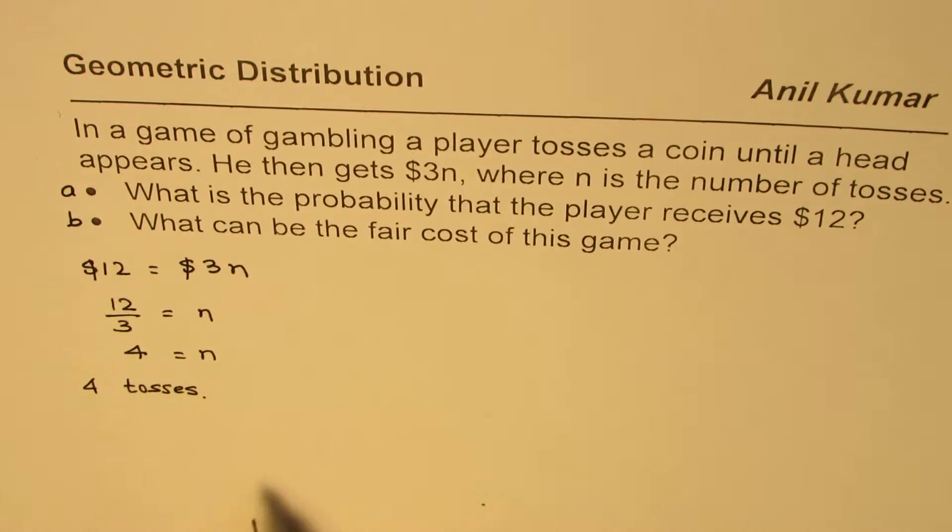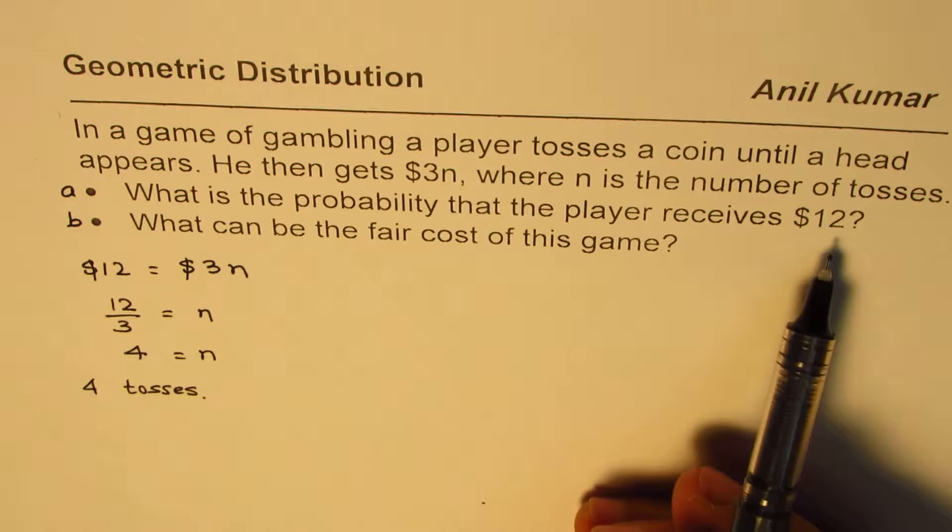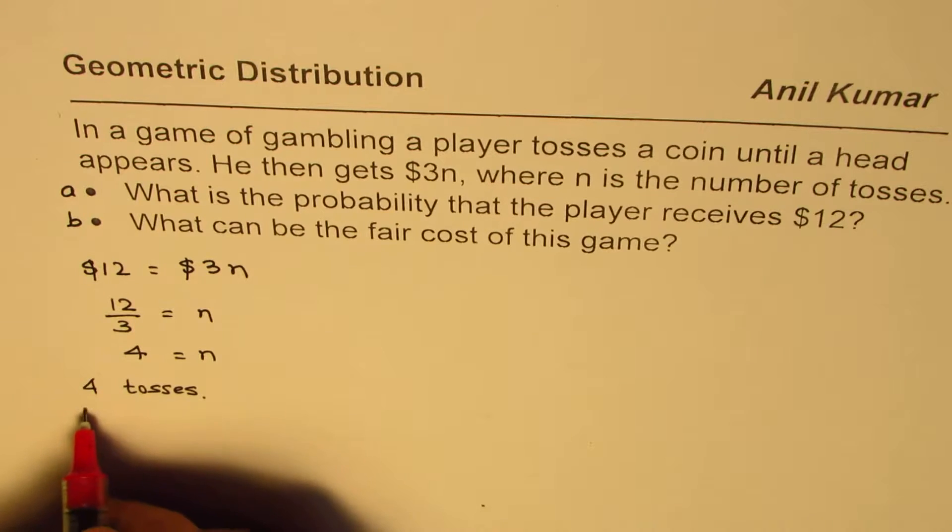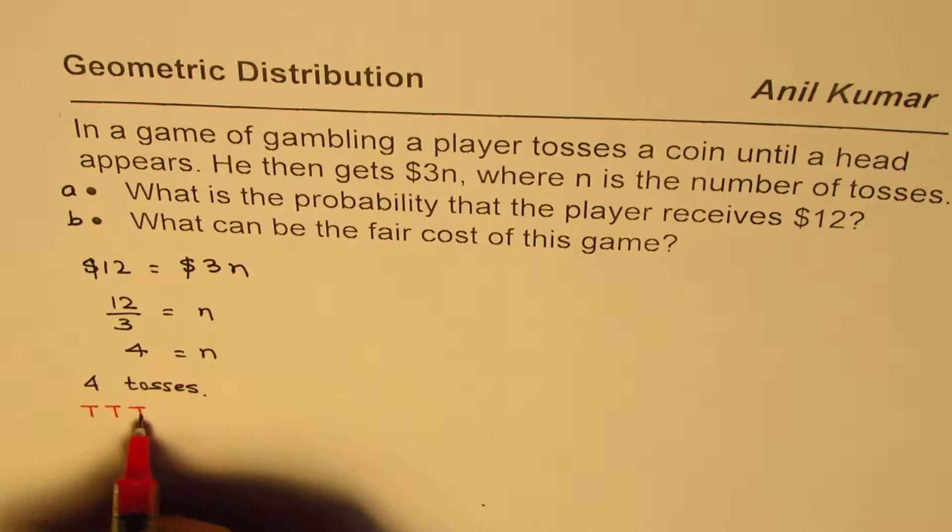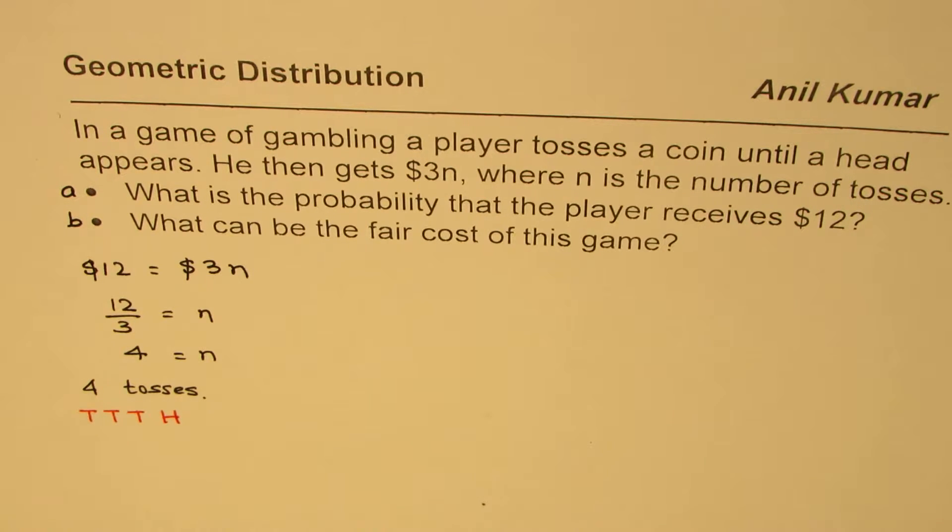What is the probability that the player receives $12? That is to say there was tails, tails, tails, and then head. So that is the kind of toss. There are 3 failures and then a success. We need to find this probability: 3 failures and a success.